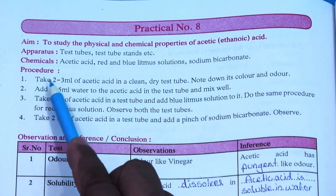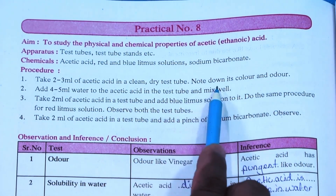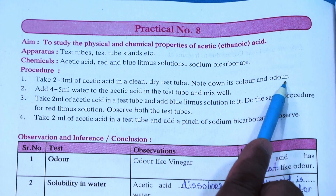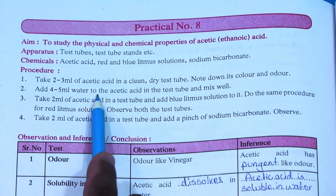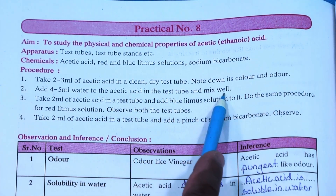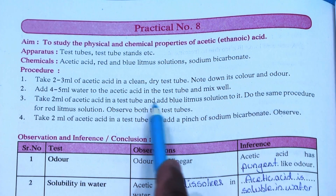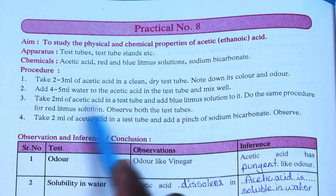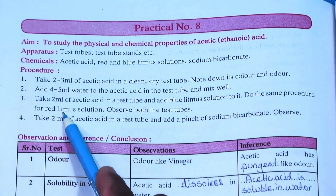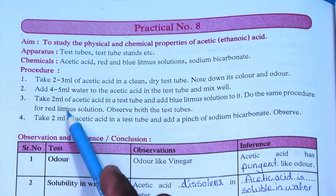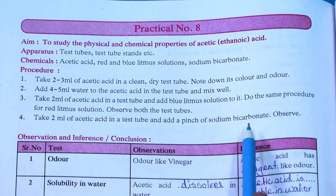The procedure is: first, take 2-3 ml of acetic acid in a clean and dry test tube and note down its colour and odour. Second, add 4-5 ml of water to the acetic acid and see whether it mixes or not. Then take 2 ml of acetic acid and add blue litmus solution. Add red litmus solution to another test tube with acetic acid and write the observation. Finally, take 2 ml of acetic acid with a pinch of sodium bicarbonate and observe.